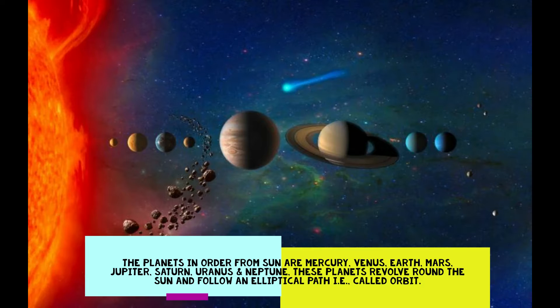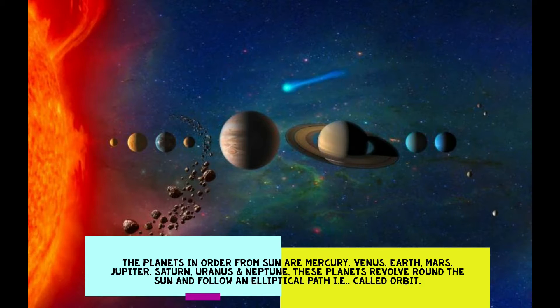In our universe, there are other celestial bodies like comets, meteors, asteroids, etc. The planets in order from the sun are Mercury, Venus, Earth, Mars, Jupiter, Saturn, Uranus, and Neptune.